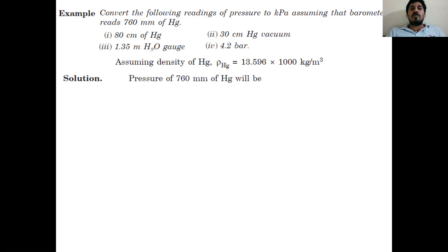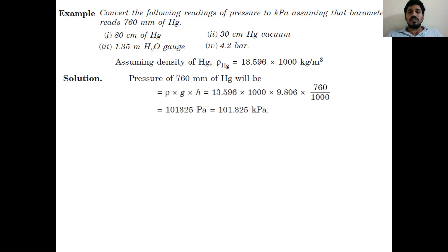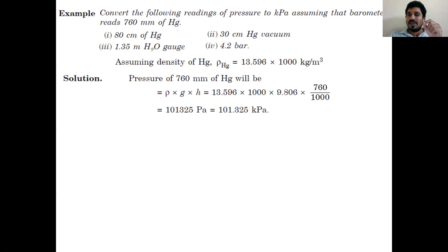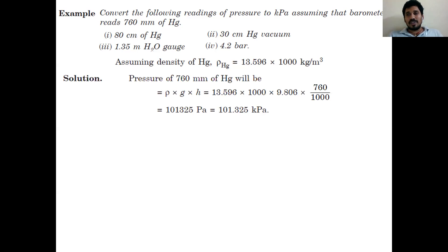First of all, for 760 mm of Hg, using the hydrostatic law pressure = ρgh: ρ is the density of mercury = 13596 kg/m³, g = 9.806 m/s², and h = 760 mm = 0.760 m. Dividing by 1000 to convert to kilopascal gives 101325 ÷ 1000 = 101.325 kilopascal. So 760 mm of Hg equals 101.325 kilopascal.